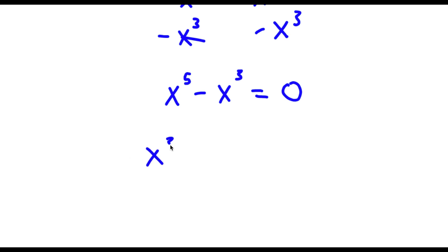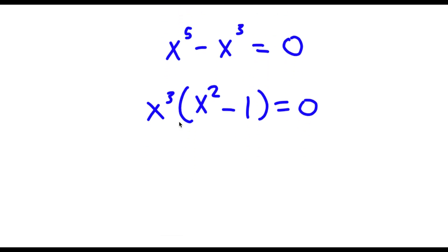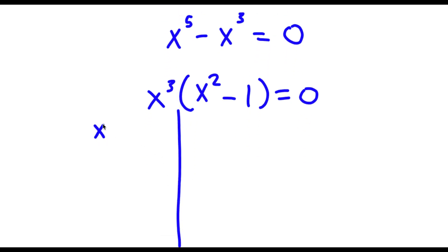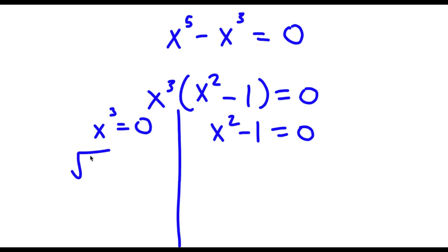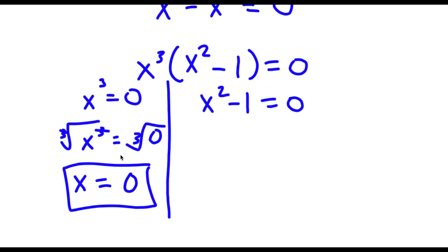So now I have x to the power of 3 times x squared minus 1 is equal to 0. So now this is going to give me two equations. I have x to the power of 3 is equal to 0, and I have x squared minus 1 is equal to 0. For x to the power of 3 equals 0, I'm going to take the cube root on both sides. The cube root of x to the power of 3 is simply x, and the cube root of 0 is 0. So x equals 0 is one solution.